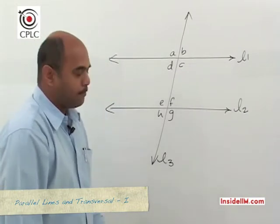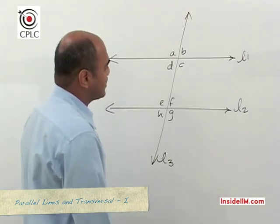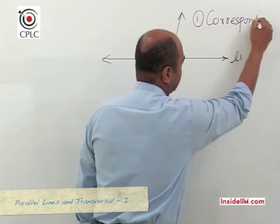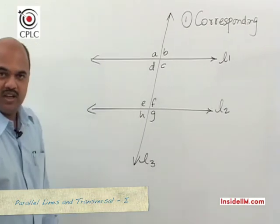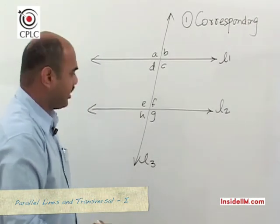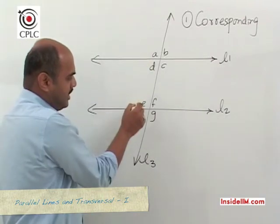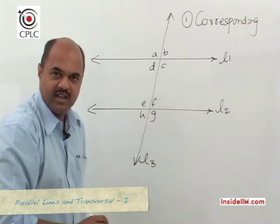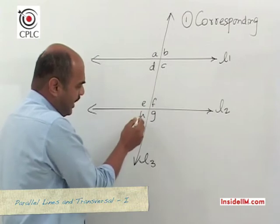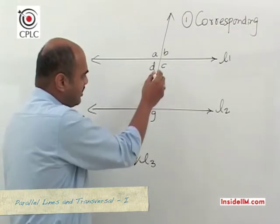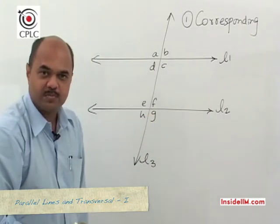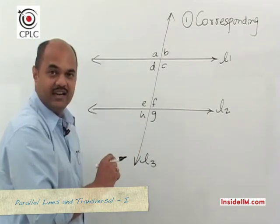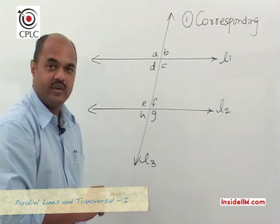The first type is called corresponding angles. In this diagram, angle A and angle E are corresponding angles, angle B and angle F are corresponding angles, angle D and angle H are corresponding angles, and angle C and angle G are corresponding angles. So there are four pairs of corresponding angles, and a key property is that corresponding angles are always equal to each other.